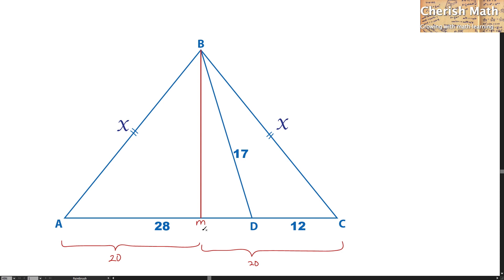The next length to find out is MD. Simply by using 20 minus 12, and that is 8. The line BM and the baseline AC are perpendicular to each other.